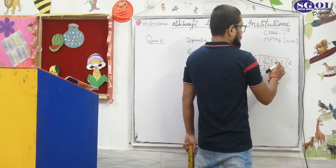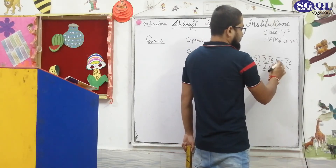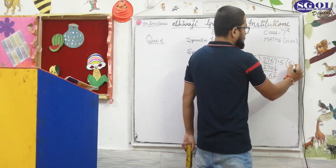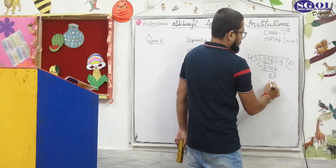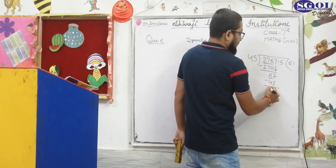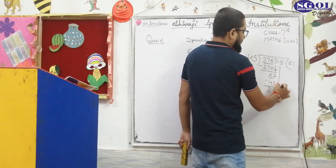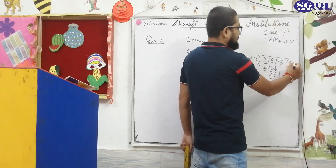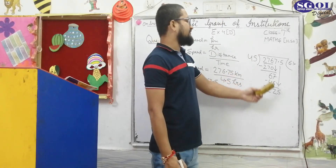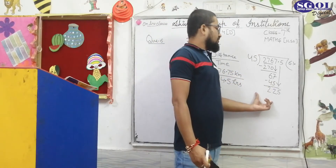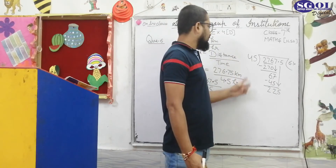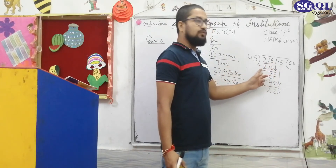We copy the decimal. It will be 67 here. 45 times 1 is 45. Subtract to get 2, and bring down 2 to get 22. Then carry the decimal. Normally you can understand that 45 times 6 is 270.